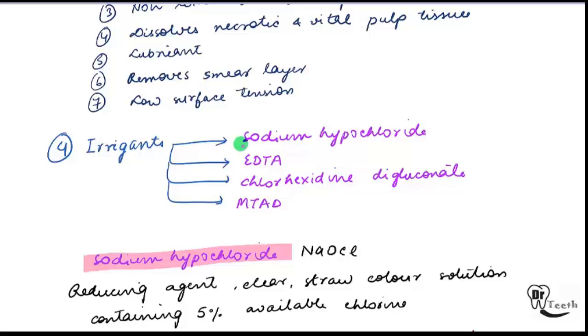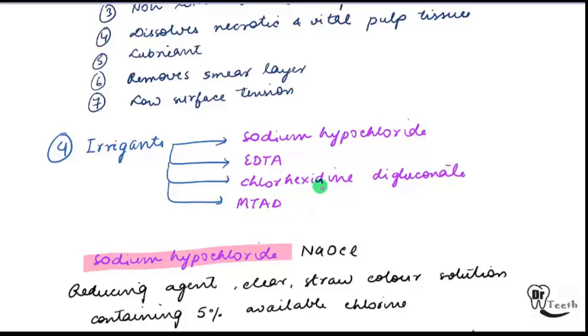The main irrigants we will discuss are: the most important one, sodium hypochlorite; then EDTA; chlorhexidine digluconate; and MTAD.